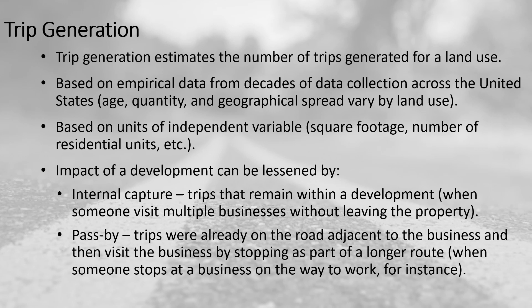Internal capture and pass-by trips lessen the impact of a development on the roadway network. Another area that can reduce vehicular impact is a multimodal split of traffic — if some people will be walking, biking, or taking transit to that facility, that's going to have a lower impact on the adjacent vehicular roadway network.